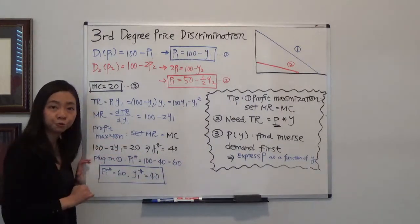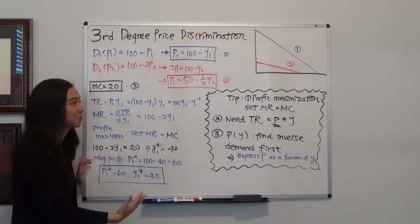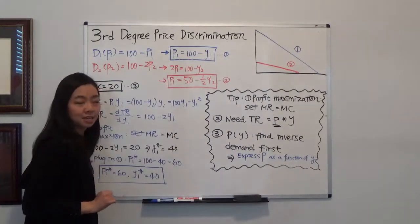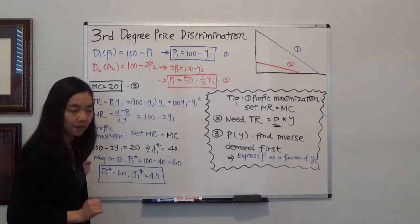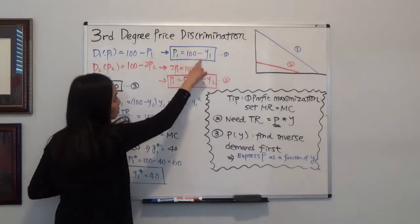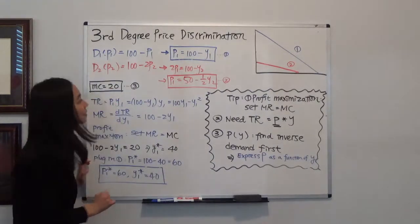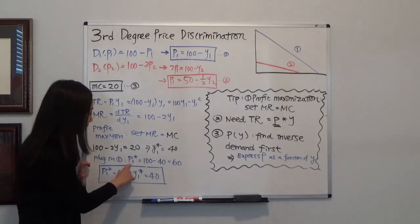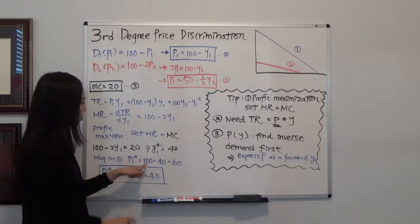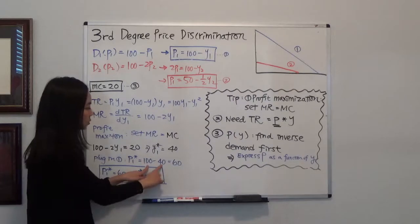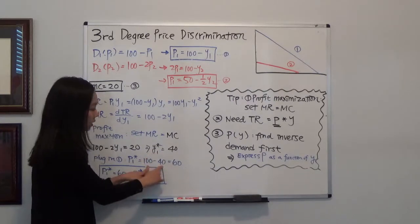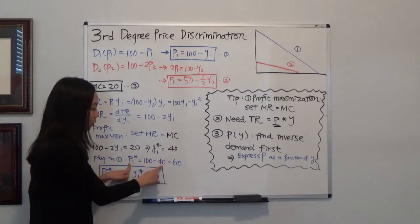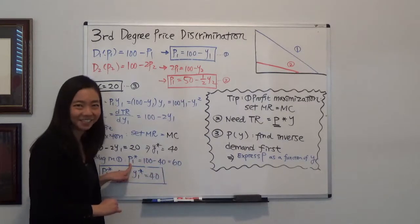To find the optimal price for the first market, we use the inverse demand function: P1 equals 100 minus y1. The optimal price P1 star equals 100 minus y1 star. Since y1 star is 40, the optimal price is 100 minus 40, which gives 60.